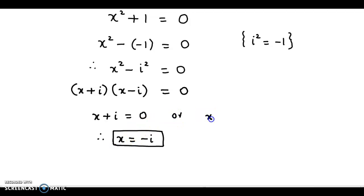Or, if we consider x minus iota equal to 0, from here we have the second value of x which is equal to iota. So, these are the two values plus and minus iota.